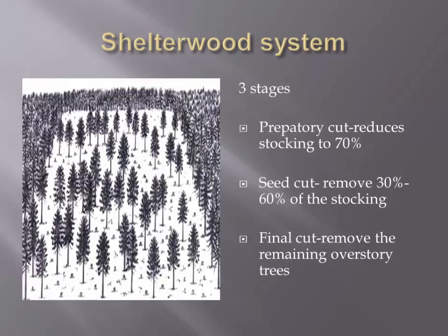The last system is the shelterwood system. The shelterwood system will again mimic a clear cut, but the difference is you're going to use three stages to remove the overstory. So instead of clear cutting it all today, you're going to clear cut it in stages over time — it could be 20 years. If you're someone who doesn't want to look out your back window and see a clear cut, this will be much more aesthetically pleasing. You're doing it in stages over time.